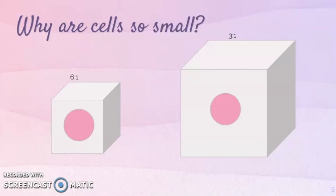If the surface area to volume ratio is too small — meaning we have not enough surface area to support the volume of the cell — the cell is not going to be able to support all of the chemical functions it needs to do. Cells need to stay a certain size in order to support all of these functions, so we want a greater surface area to volume ratio wherever we can. We'll see this theme come up again and again in different cellular structures, different tissues, as well as organs.